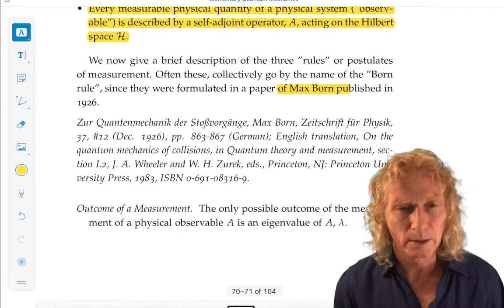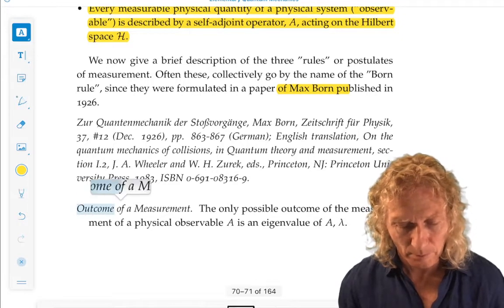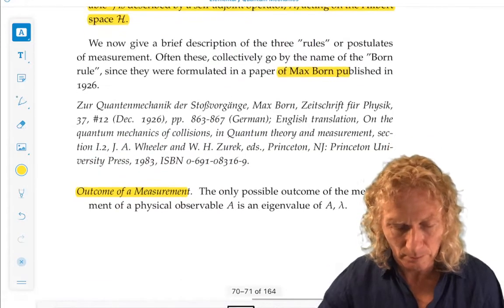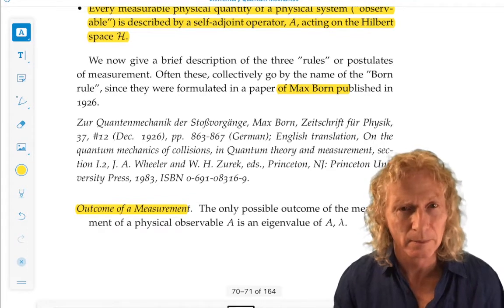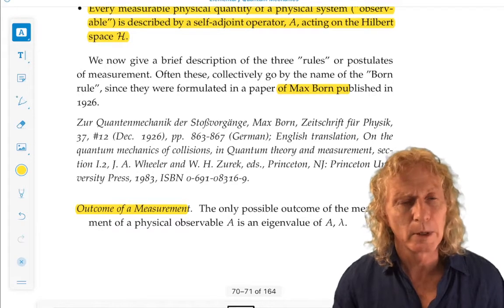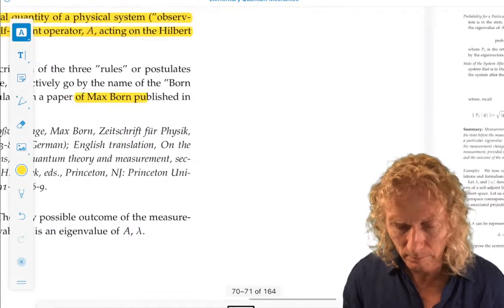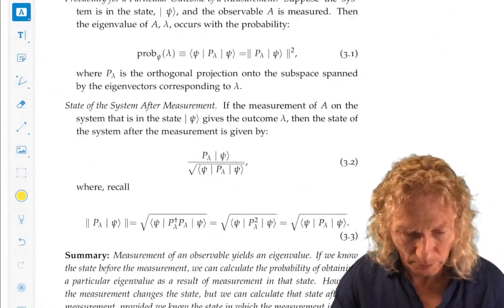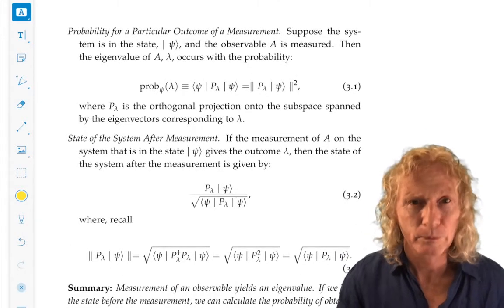Rule number one, the outcome of a measurement. The only possible outcome of a measurement of a physical observable is an eigenvalue of A. Suppose you want to measure the physical observable A. What are you going to get? It's only going to be an eigenvalue. That's bizarre, but it's the way nature works.